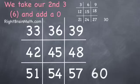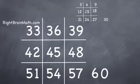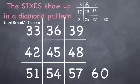Now the sixes show up here too. Let's take a look at how they show up because they're every other three. So the sixes are six, twelve, eighteen, and twenty-four. They create a diamond.